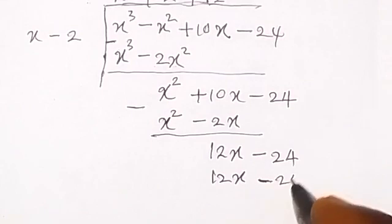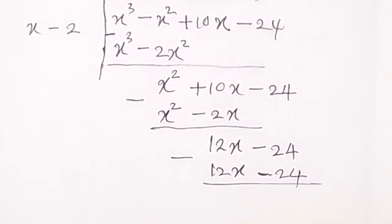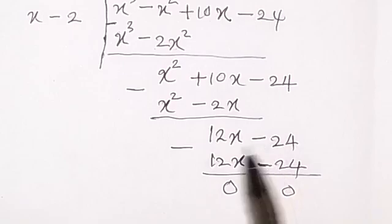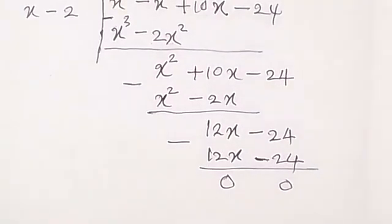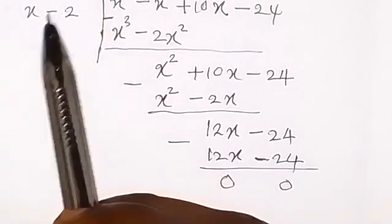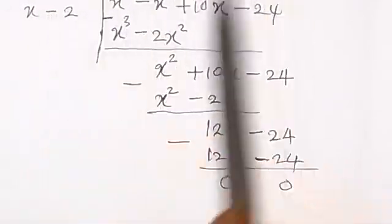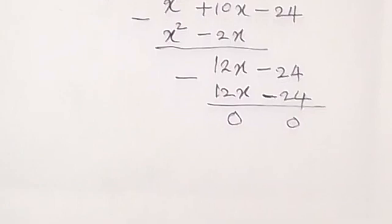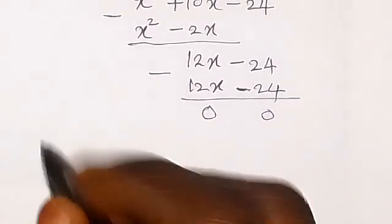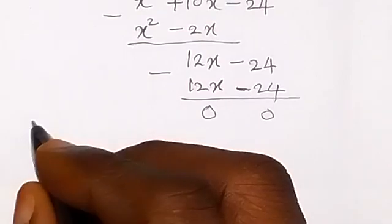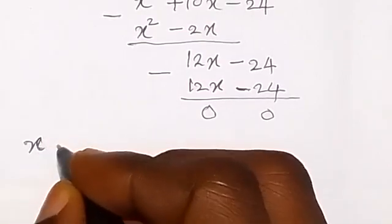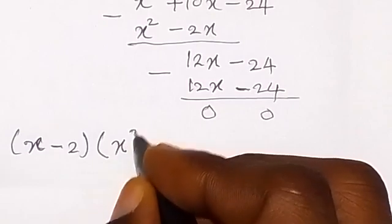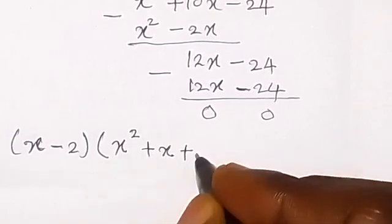By the time we subtract again we have zero, because 12x minus 12x is zero, and minus 24 minus minus 24 gives zero again. We have successfully divided the cubic equation, and the result is a quadratic equation. So from the cubic equation we have x minus 2 as a factor, and the remainder is x squared plus x plus 12.